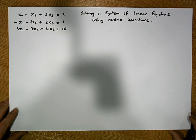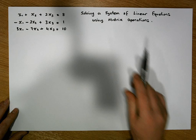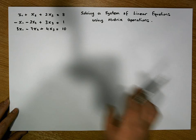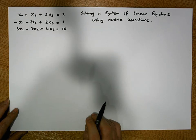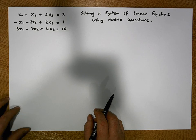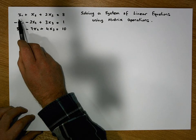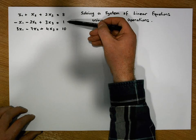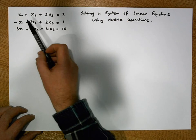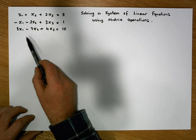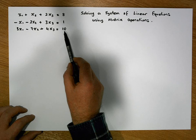What we'd like to do is use matrix operations — more importantly, Gauss-Jordan elimination — to reduce a matrix representation of these equations into reduced row echelon form. We'd like to find solutions for x1, x2, and x3 such that when substituted into any of these equations, we get 8, 1, and 10 respectively.